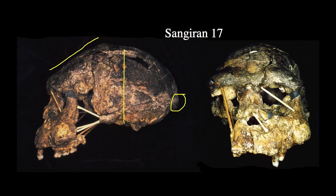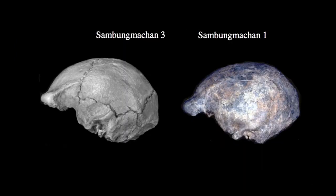In the case of Sangiran 17, there is a continuous superorbital torus across the front, and a very wide face associated with broad, flaring zygomatics. We can see these features continue in later specimens from Southeast Asia, such as the two remains from the middle Pleistocene site of Sambungmacan. Sambungmacan 3 on the left, Sambungmacan 1 on the right. Again, we have a prominent superorbital torus, with a little flare on the edge now referred to as a frontal trigon, visible on both specimens.